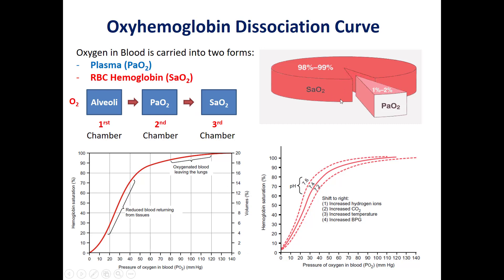In this diagram, we see the percentage of oxygen saturation in the plasma — around 1 to 2% — and also in the RBC — around 98 to 99%.